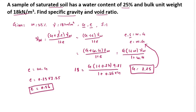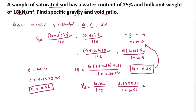In case we need to find out the dry density gamma D, the formula is: gamma D equals G into gamma W divided by 1 plus E. Substituting G equals 2.25 and E equals 0.56: gamma D equals 2.25 into 9.81 divided by 1 plus 0.56. Solving this, we get gamma D equal to 14.42 kN per meter cube.